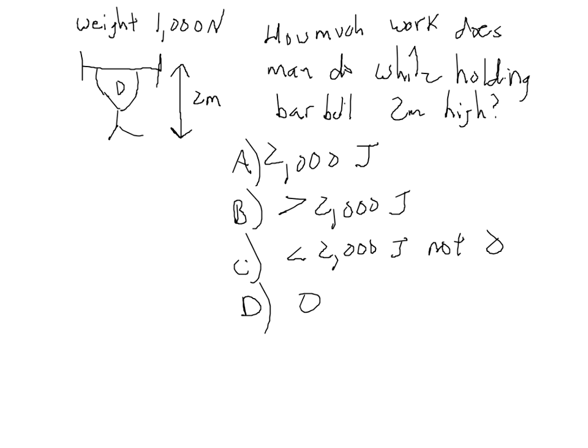Ready for the correct answer? The correct answer is D. Zero work. Because work is equal to force times displacement times the cosine of the angle between them. But in this case, the man is just holding the barbell. He's not displacing it. And the question explicitly asks how much work did he do while holding it there, not how much work did he do when he lifted it. So according to the physics definition of work, since there's no displacement, the man is not doing any work.